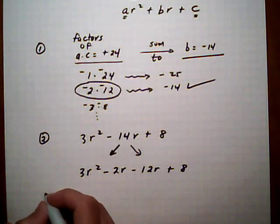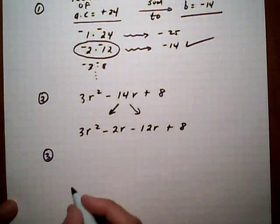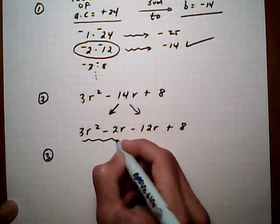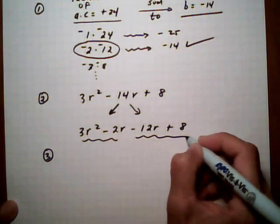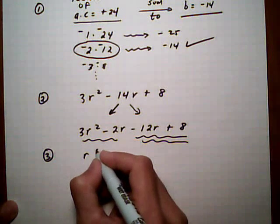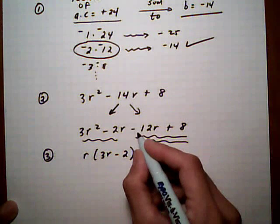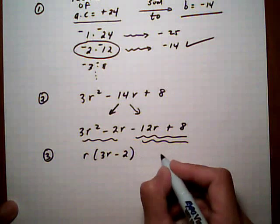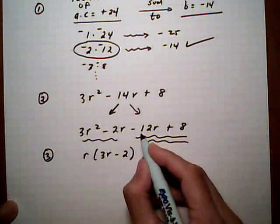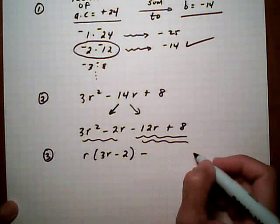Once you've done the rewrite, the third step is factor it by grouping. Group these two together and group these two together. We get r times 3r minus 2. We're going to take out a minus sign because we need the binomial to be the same. Right now it's a minus plus. Take out a minus sign, makes the sign switch to plus minus.